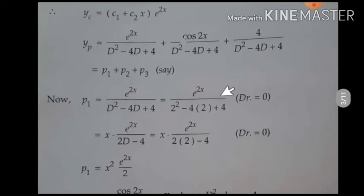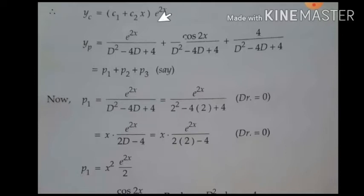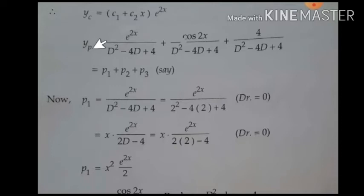The complementary function is written as: since 2 is a repeated root, yc = (c1 + c2·x) · e^(2x). You need to remember this as a formula — when roots are repeated, distinct, or complex, how to write the complementary function. You need to practice and remember these formulas.